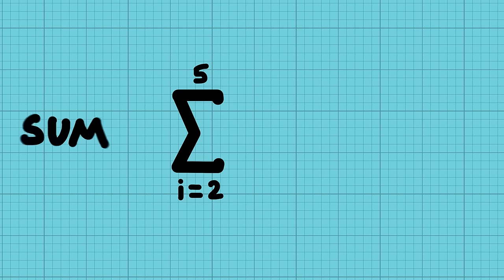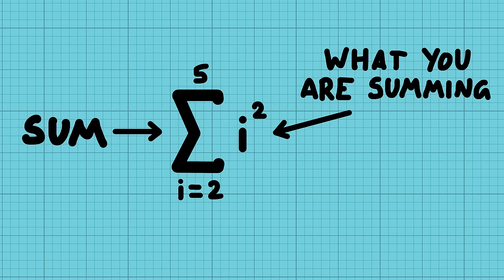This big Greek epsilon is a sum operation, and what it means is that you take this thing, and you repeatedly add it to itself, but put in different numbers each time.